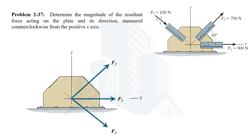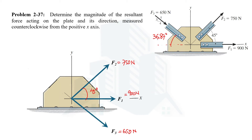The magnitude of F1 is 900 N, F2 is 750 N, and F3 is 650 N. Using the right-angle triangle, we can calculate the angle F3 makes. The perpendicular side is 3 and the base is 4, so using tan-inverse of 3/4, we get 36.87 degrees. Since opposite angles are equal, this angle also applies to F3's direction.